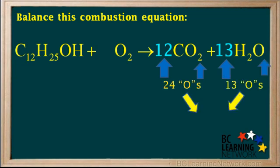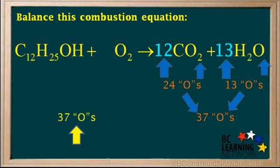Thus, we have a total of 24 plus 13, which is 37 oxygens on the right side. So to balance the oxygens, we need to have a total of 37 oxygens on the left side.